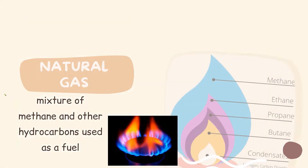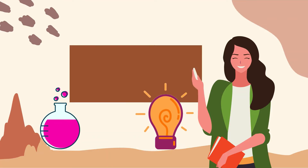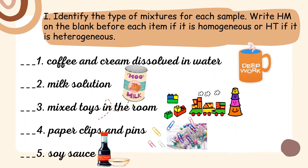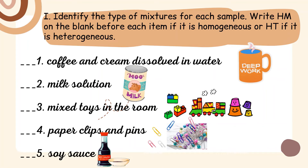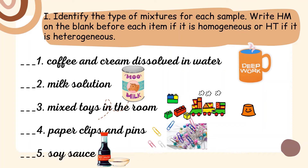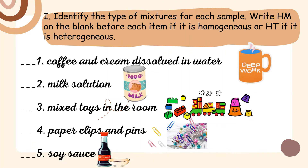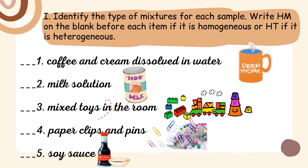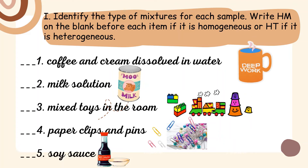It's activity time! Are you ready? Let's go! We have to identify the type of mixture for each sample. Write HM on the blank if it is a homogeneous mixture, and HT if it is a heterogeneous mixture. Number one: coffee and cream dissolving in water. Two: milk solution. Three: mix toys in the room. Four: paper clips and pins. Five: soy sauce. Remember to write capital HM or capital HT.